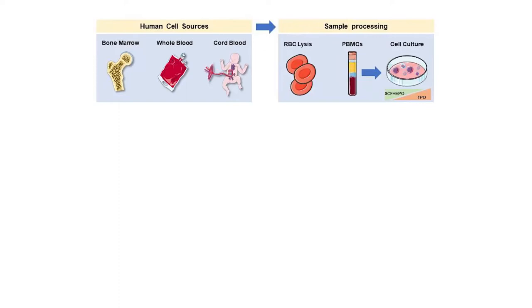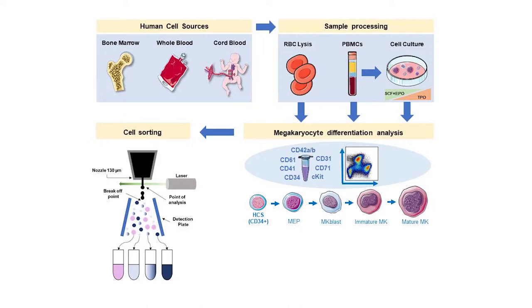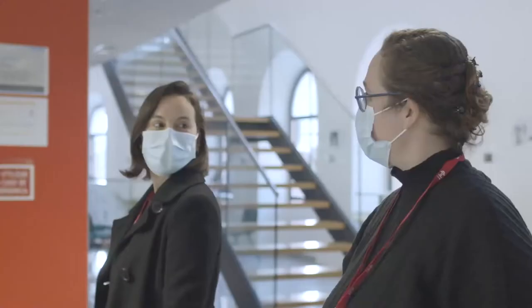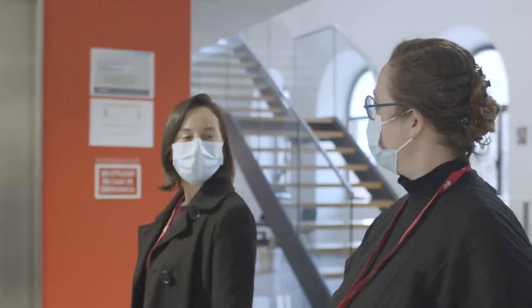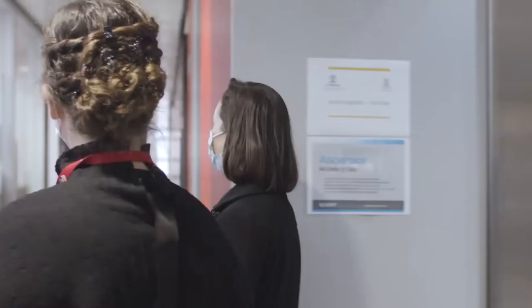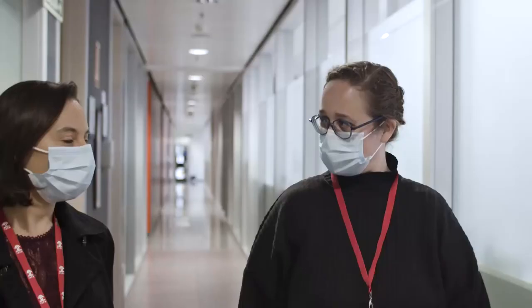We would like to present an immunophenotyping strategy for the characterization of megakaryocyte differentiation, and how that strategy allows the sorting of megakaryocytes at different stages with a flow cytometry cell sorter. The methodology can be applied to human primary tissues but also to megakaryocytes generated in culture in vitro.